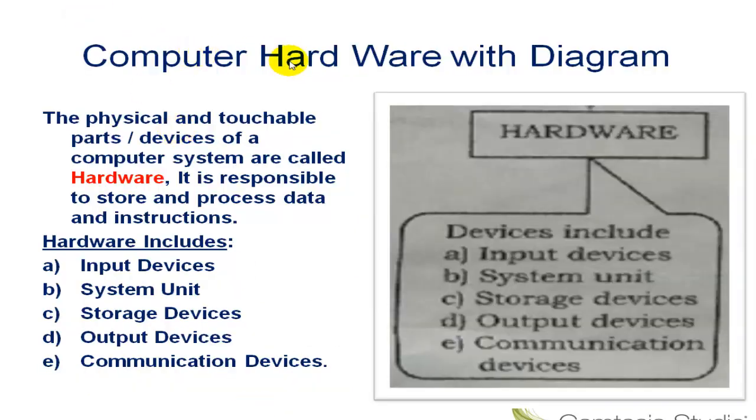Computer Hardware with Diagram. The physical and touchable parts or devices of a computer system are called hardware. It is responsible to store and process data and instructions. Hardware includes input devices.